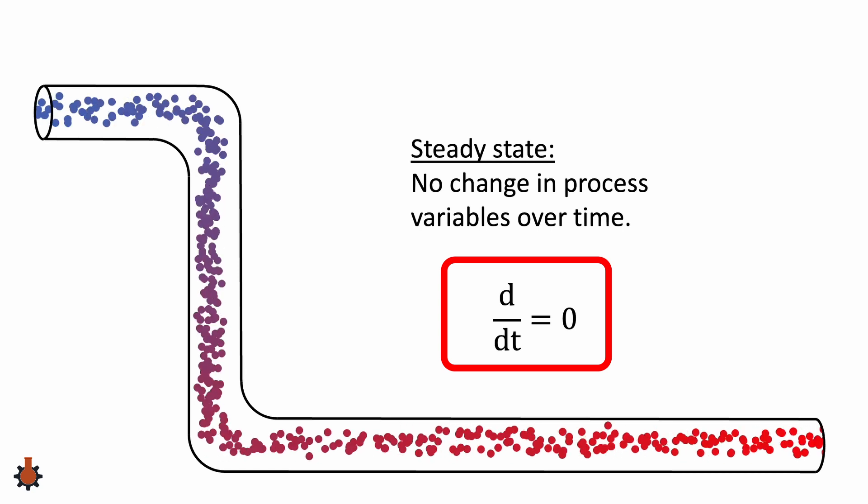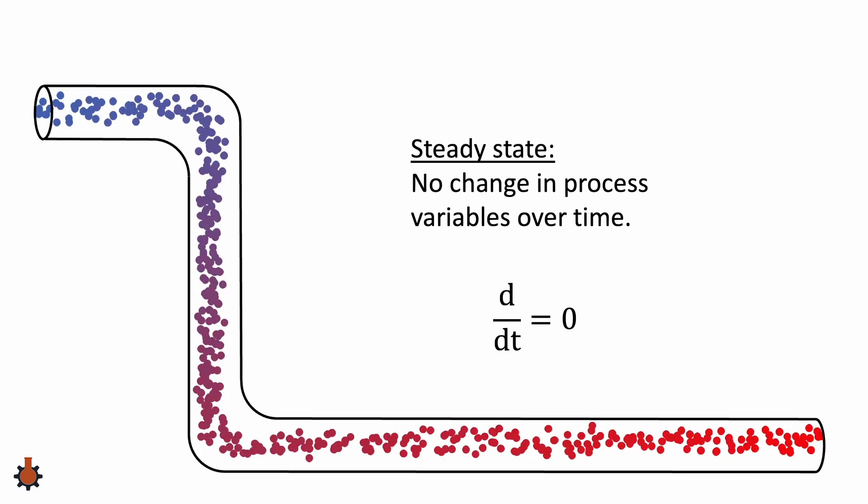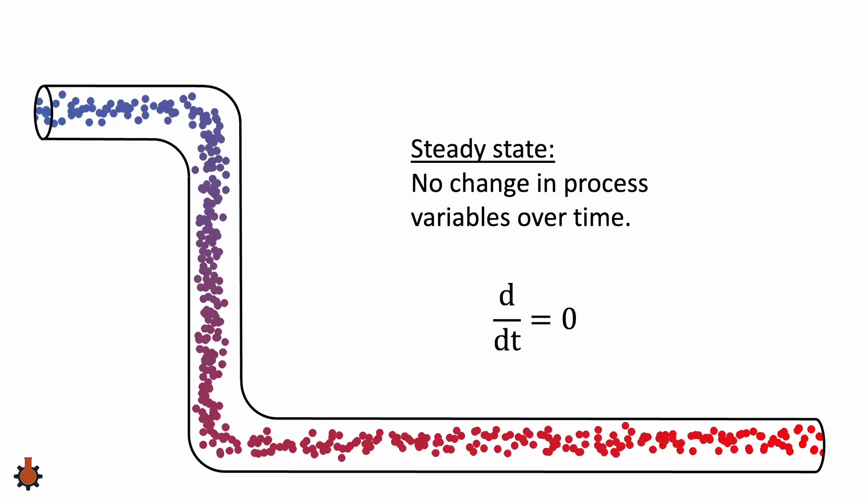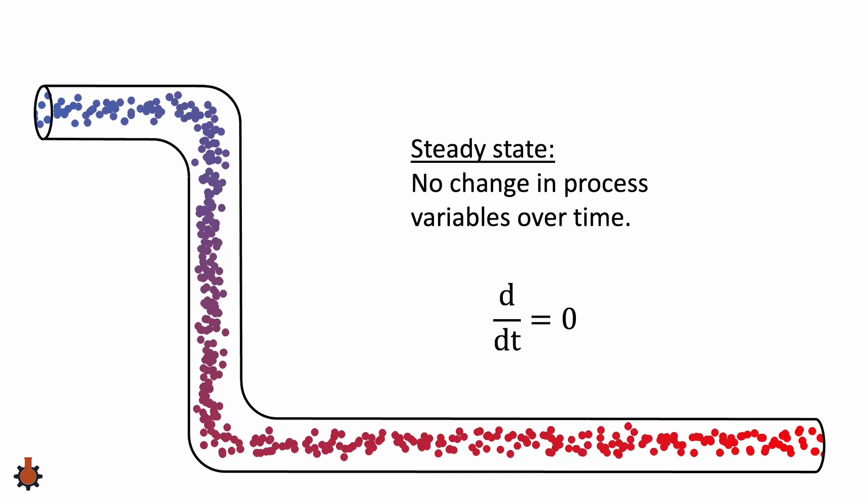Mass, energy, entropy, pressure, temperature, volume, and so on. At steady state, all of these variables would remain constant over time. Should just one change, the entire system is no longer at steady state.